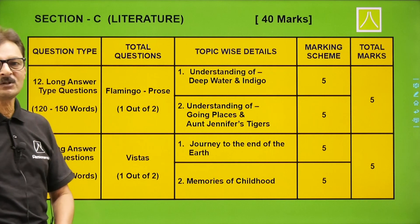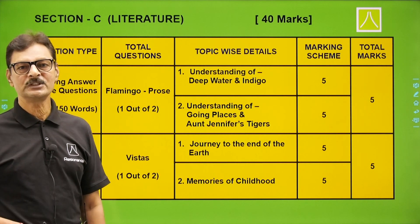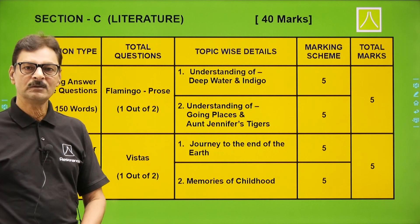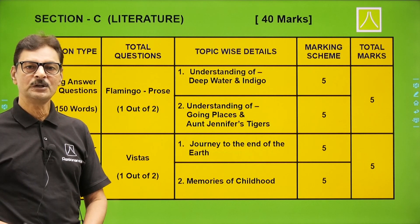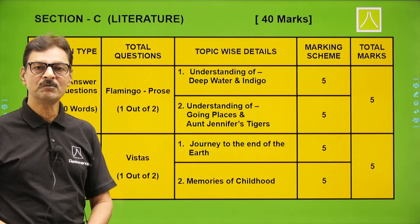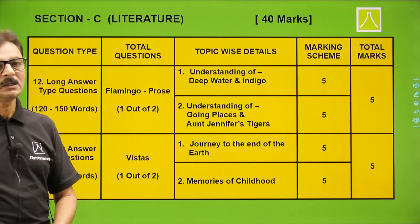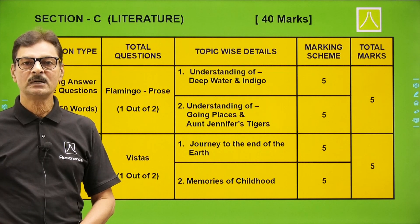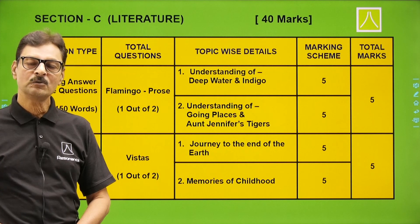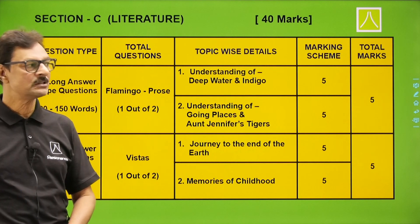Finally, the last type of questions are based on Vistas. One question is from 'Journey to the End of the Earth' by Tishani Doshi, and the other is from 'Memories of Childhood.' Two questions — attempt any one — word limit around 150–175 words, five marks. So in total: 40 marks are based on your textual part — Flamingo and Vistas — 20 marks for the reading section, 20 marks for the writing section, and 40 marks for literature.